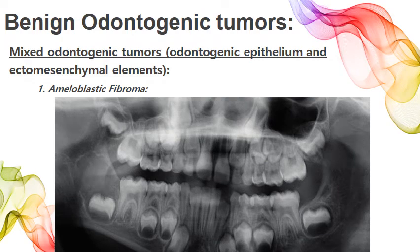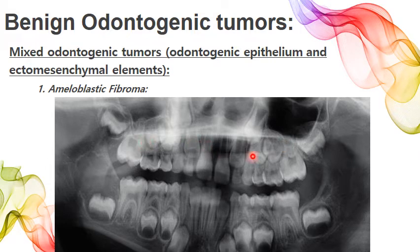The first tumor in the category of mixed odontogenic tumors is ameloblastic fibroma. Ameloblastic fibroma is considered a true tumor in which both epithelial and mesenchymal components have neoplastic properties. It occurs in young patients in the first two decades of life with a slight female predilection. It is mostly located in the posterior region of the mandible, often associated with an unerupted tooth, as we see in this radiograph of a young patient — we can identify both permanent and deciduous teeth.